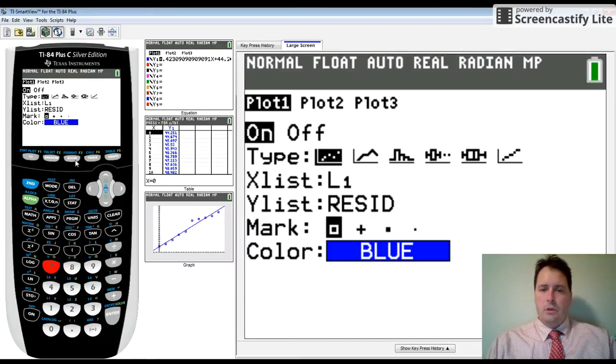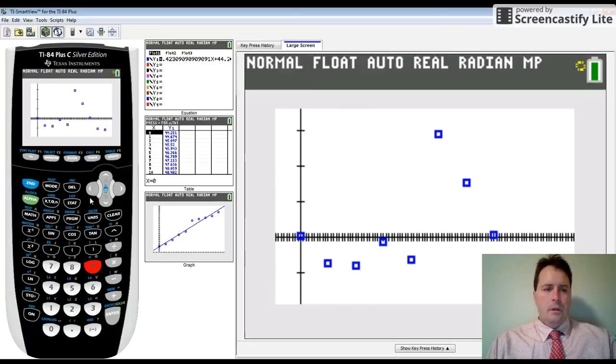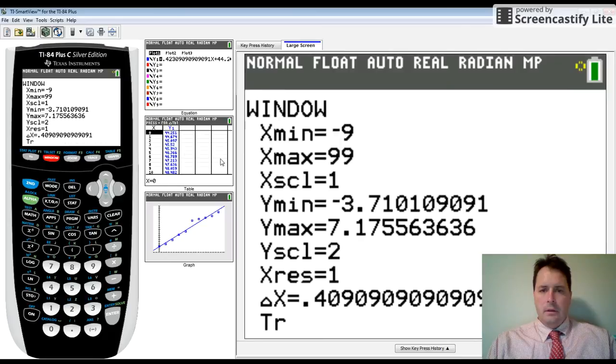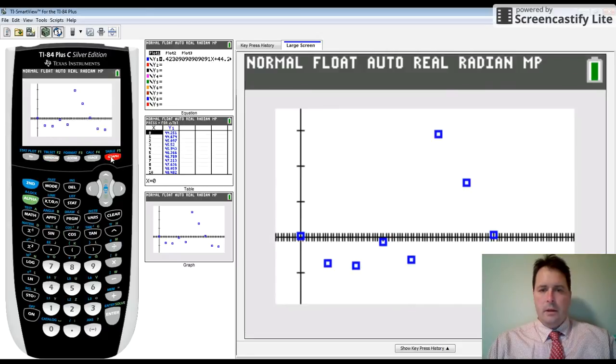You want to hit zoom nine to change your window so it'll fit the residuals better. When I hit zoom nine, you can clearly see that my window has changed. It was enough to see the residuals. I want to go back to the graph.